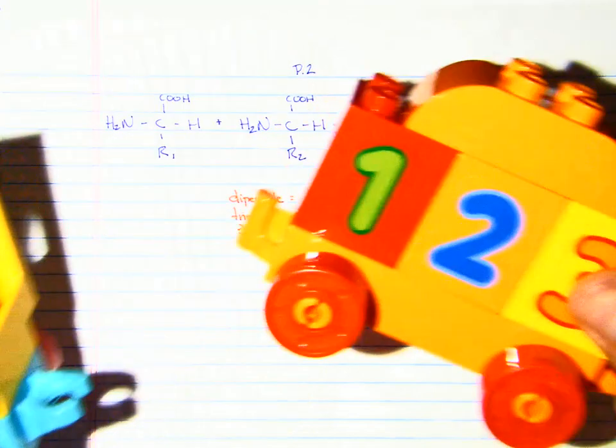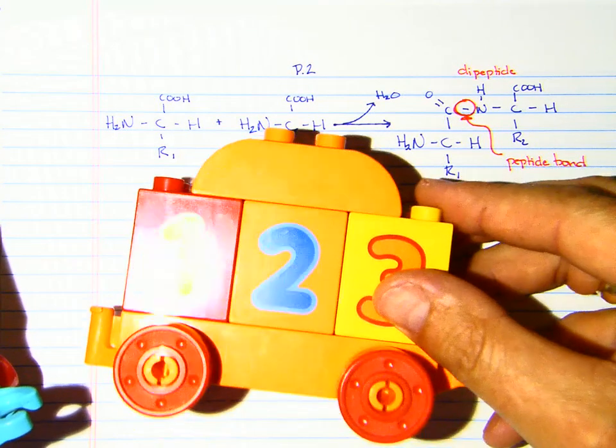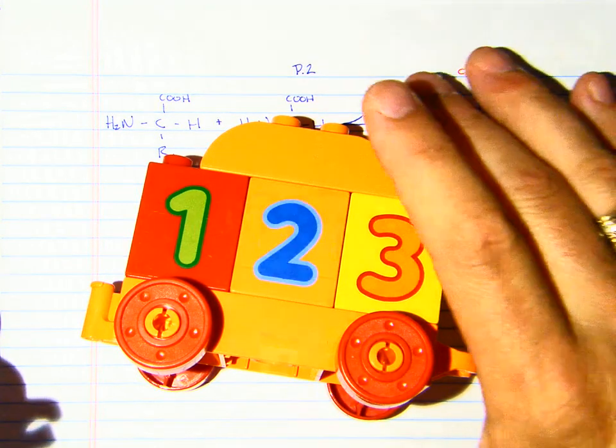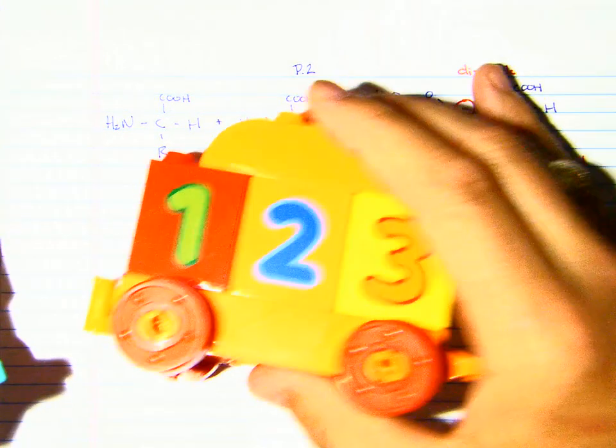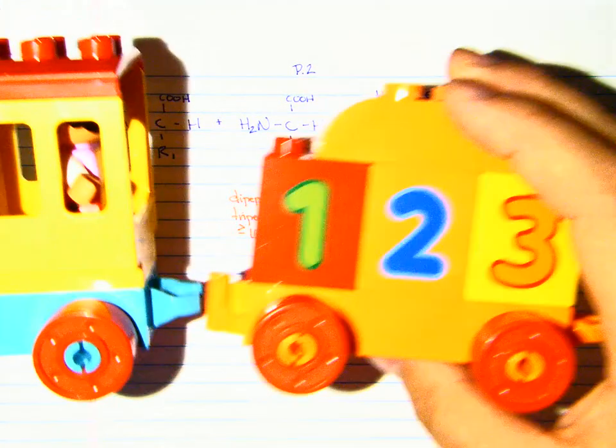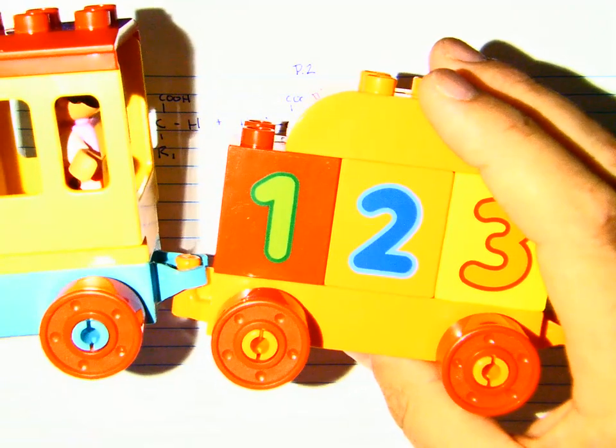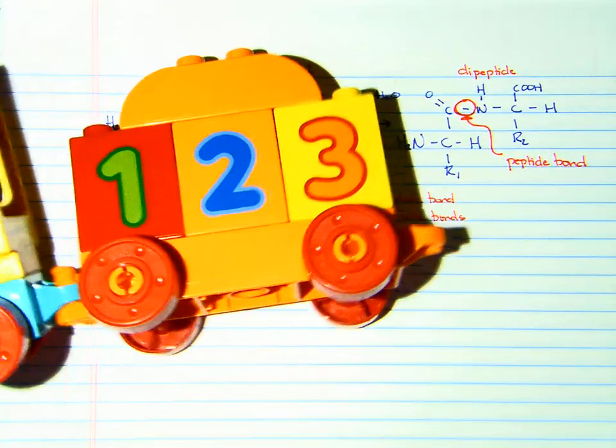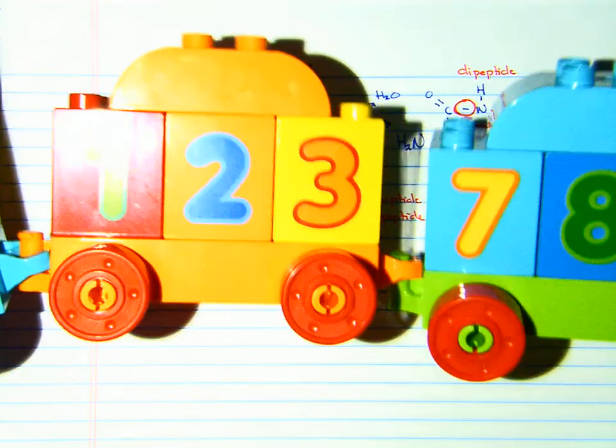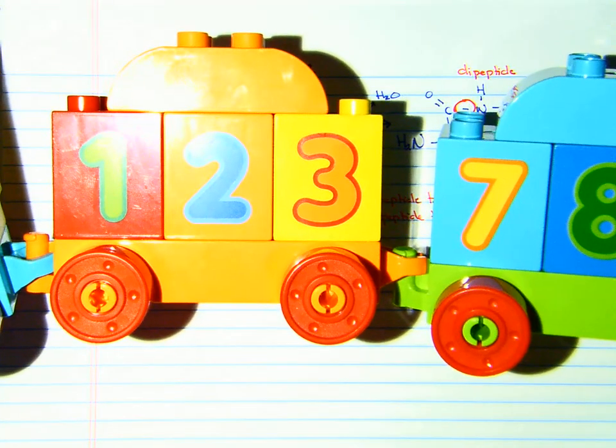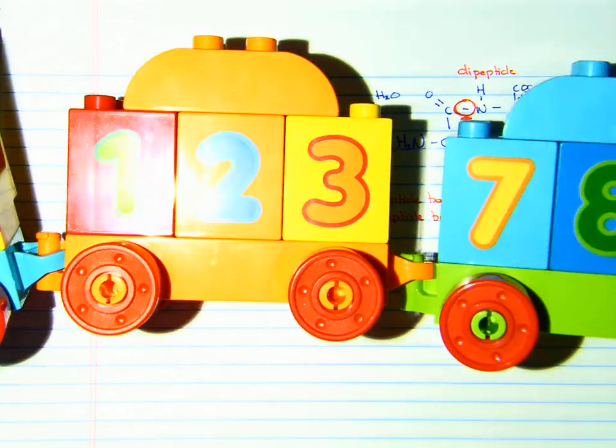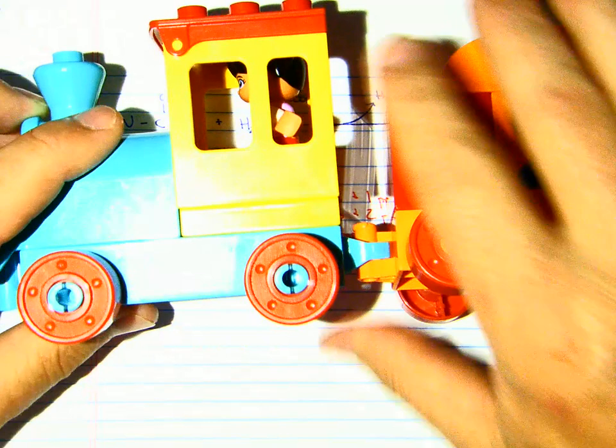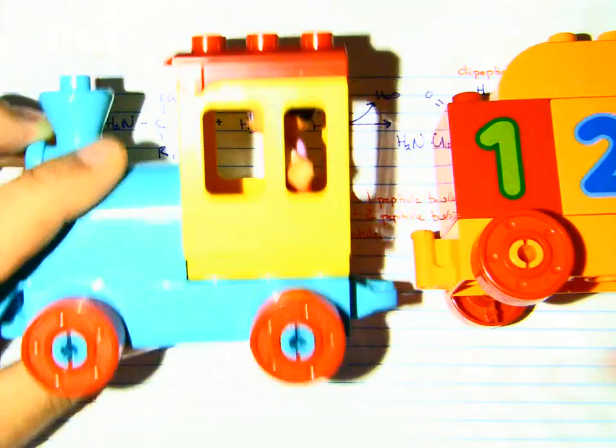We have another amino acid, and this amino acid is not an engine. It's the numbers 1, 2, and 3, and we can pretend that's its specific R group. Right now we have two amino acids. We form a dipeptide bond and they are linked together. If we had three amino acids, we could link those together and now we have a tripeptide. The wheels represent the amine group, and each train car is an amino acid.